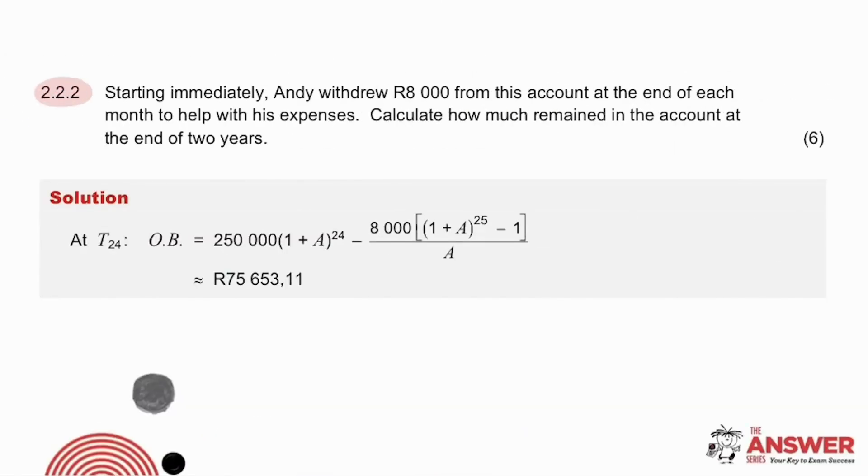You'll see in this next part question why each word used is so important. The words starting immediately show that it is not your typical question. Andy withdrew 8,000 rand at the end of each month. We have been asked to calculate how much remained in his account at the end of two years, which means this is an outstanding balance question. Because it says at the end of two years, this means we are looking at time period 24. So firstly, if he hadn't withdrawn anything from the account, the 250,000 that he inherited would have been compounded forward 24 times. But he has been taking 8,000 rand out every month, starting immediately, remember, which means he has made 25 withdrawals. The amount remaining in the account at the end of two years is just over 75,000 rand.